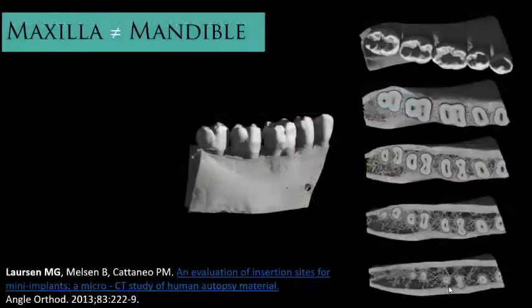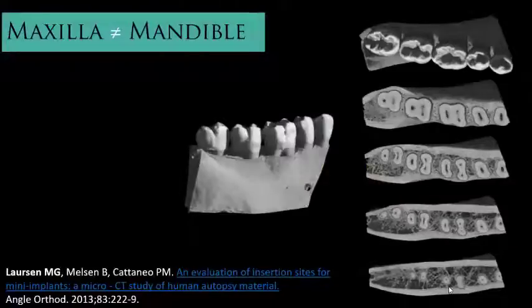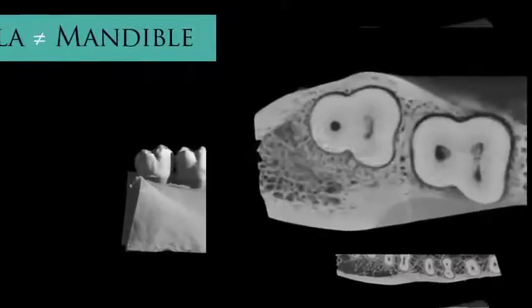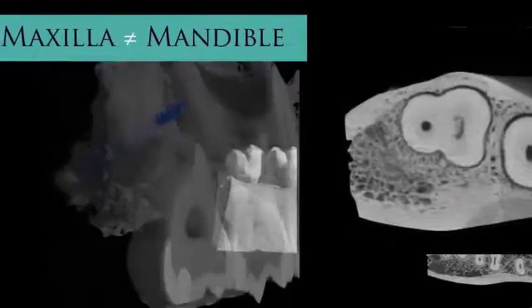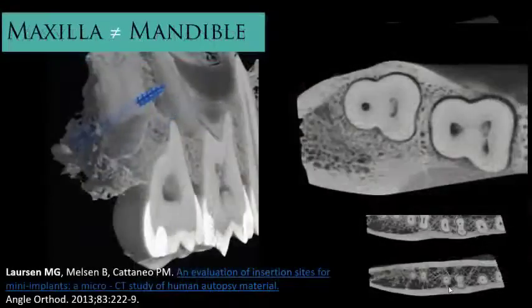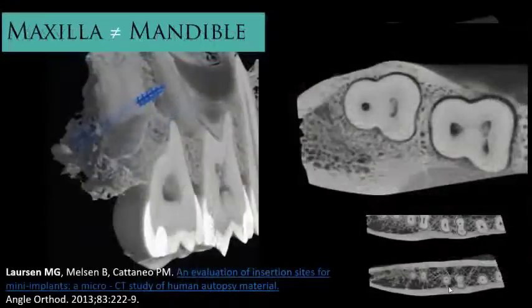This difference is striking in several areas of the maxilla and mandible. Imagine the degree of torque required to insert a mini-implant into a buccal cortical bone in the mandible and try to compare it to an insertion into cortical bone in the maxilla. Obviously, the insertion in the maxilla is much easier due to the finer density of the cortical bone in this region.